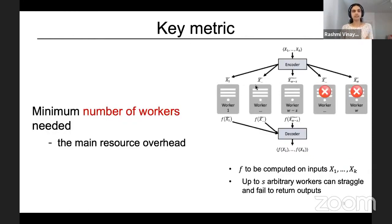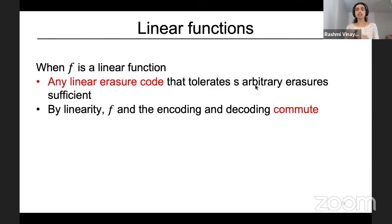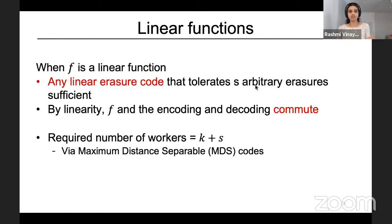So the setting pictorially looks like this: there is an encoder which takes the input points x1 to xk on which we want to compute this function f. The xi tildes are the outputs of this encoder provided as inputs to worker i. Each worker computes f on the input points provided to them, and the decoder takes these outputs and decodes the desired output, which is f of x1 to f of xk. Out of w workers, any s of them can straggle, so the decoder must make do with only w minus s outputs.